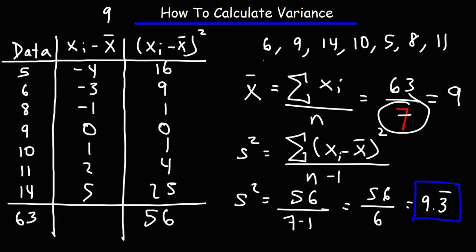So now you know how to calculate the variance of a sample. But what does the variance tell you? The variance is a measure of the spread of the data. Some data may be spread far apart, whereas some data may be more concentrated closer to the mean. And so a high variance indicates a larger spread in the data.